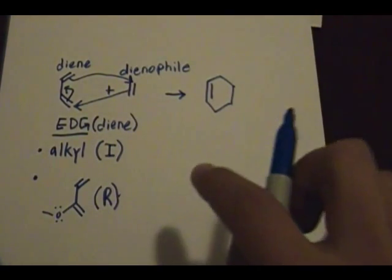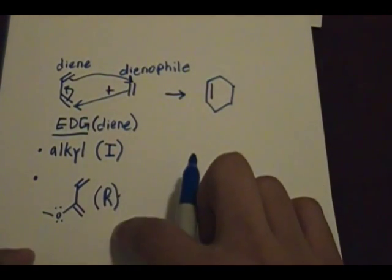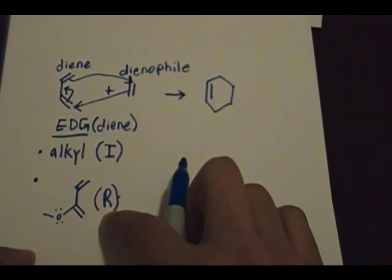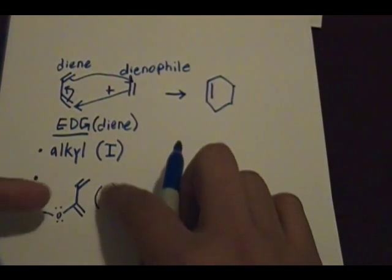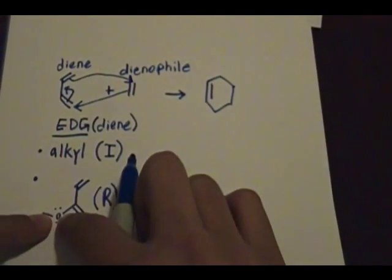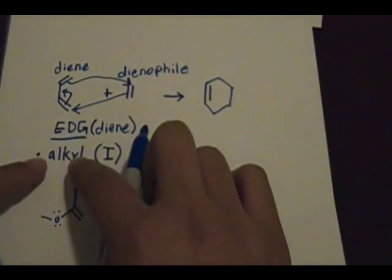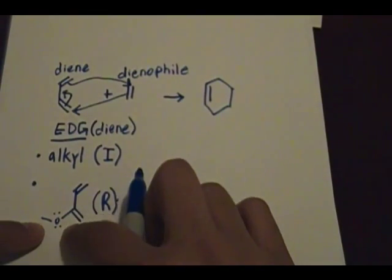Also keep in mind that resonance has a greater effect — it helps the diene be more reactive than the inductive effect does. So if you have a substituent with lone pairs compared to an alkyl group, the lone-pair substituent will make the diene more reactive.